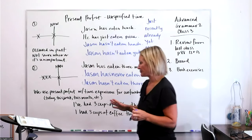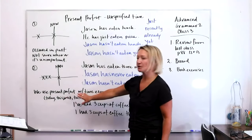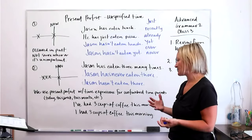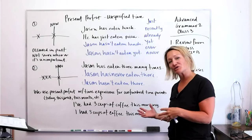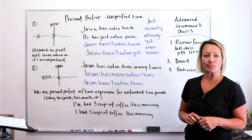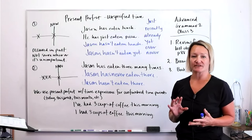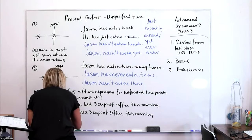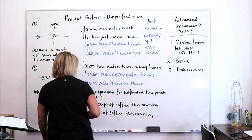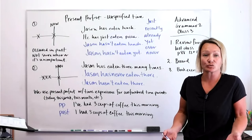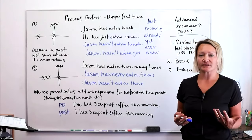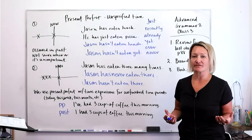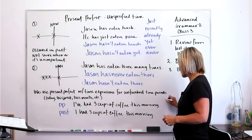We also use the present perfect with time expressions for unfinished time periods. Here's an example: 'I've had three cups of coffee this morning' — that's present perfect. Compare it to 'I had three cups of coffee this morning' — simple past. They look similar but have very different meanings.